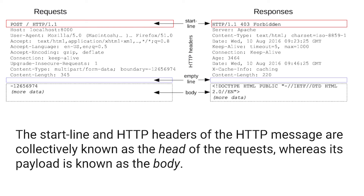In the next video, we will see the remaining messages and the different types of request headers. The start line and the HTTP headers of the HTTP message are collectively called the head of the request, whereas the payload is known as the body. So combining the start line and headers gives the head, and the data is called the body. That's all about HTTP messages. If you have any doubts or suggestions, please post comments below, and if you like this video, please support me by subscribing to my channel. Thank you.